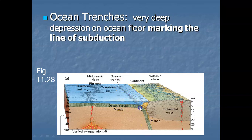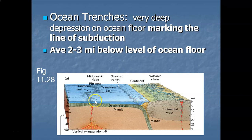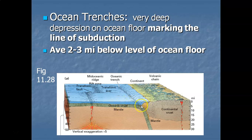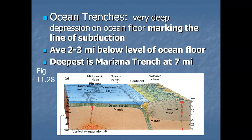Ocean trenches are very deep depressions on the ocean floor marking the line of subduction — they're evidence of subduction. They are miles deep. You've got mountains thousands of feet tall at the mid-ocean ridge, and then miles-deep trenches where the basalt plunges back into the asthenosphere. The average ocean trench is a couple miles deep. The deepest ocean trenches are in the Pacific — the Mariana Trench goes down 36,000 feet, or about seven miles deep.